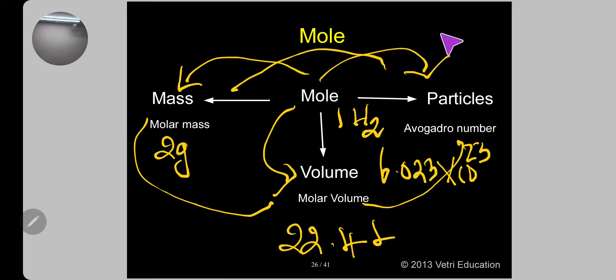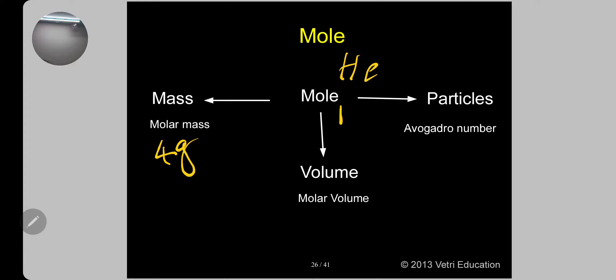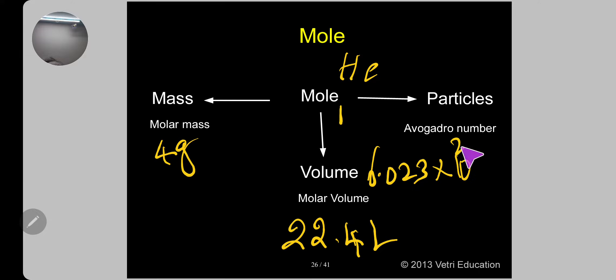Another example: helium gas. One mole of helium has a molar mass of 4 grams, molar volume of 22.4 liters (common for all gases), and contains 6.023 × 10²³ atoms — note it is atoms since helium is an atomic gas.